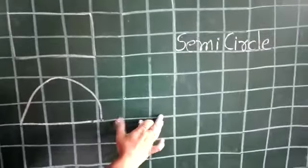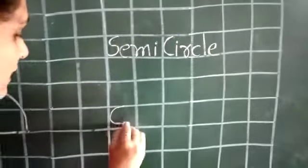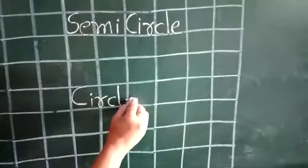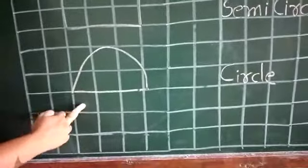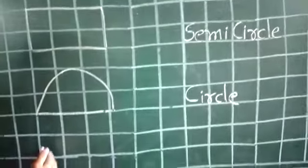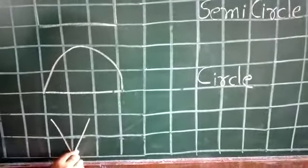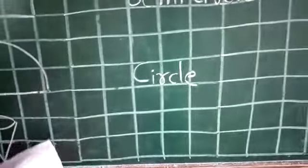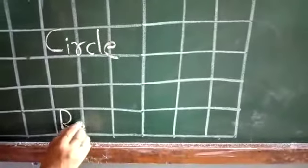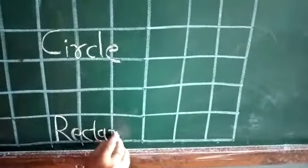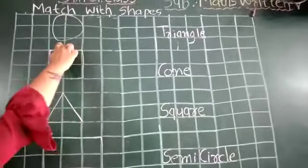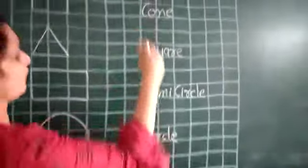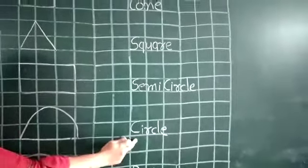Leave three boxes. Write here C-I-R-C-L-E. Circle. Again leave one box. Do the cone. Again leave three boxes. Write here R-E-C-T-A-N-G-L-E. Now what is this? This is circle. Where is circle? Found it. Here is circle. Magic.